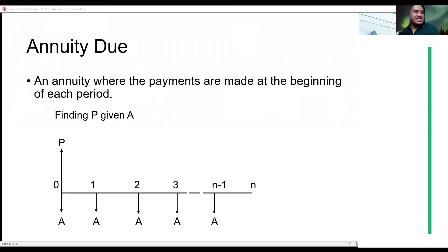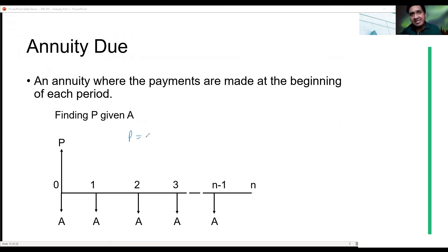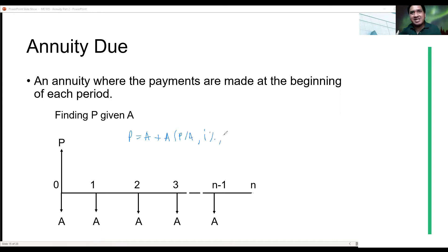Let's work out the formula. So if we take the equation of value at focal point 0, P is equal to A — you don't include this first one in the annuity — then the normal ordinary annuity for N minus 1 periods. So P given A at a certain interest rate at N minus 1.